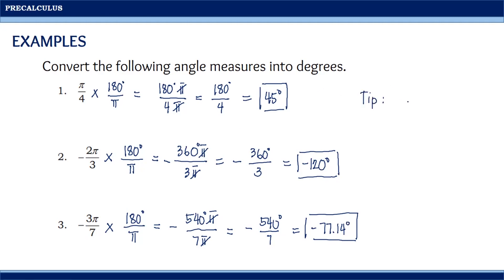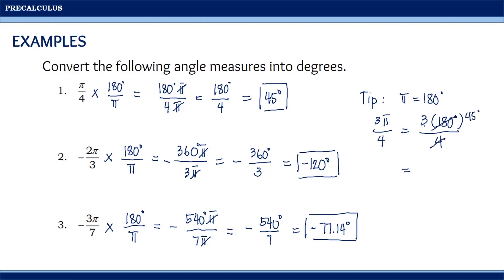Tip: for a shorter solution, remember that π is equal to 180 degrees, so you can simply substitute 180 degrees for π. For example, converting 3π over 4 into degrees, simply change π to 180 degrees. We get 3 times 180 degrees divided by 4 — simplifying, 180 divided by 4 is 45 degrees, so 3 times 45 degrees is 135 degrees. Therefore, 3π over 4 is equal to 135 degrees.